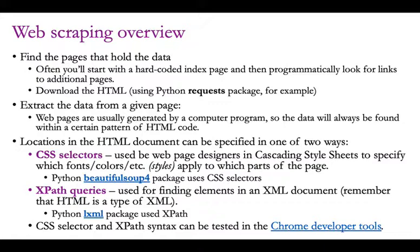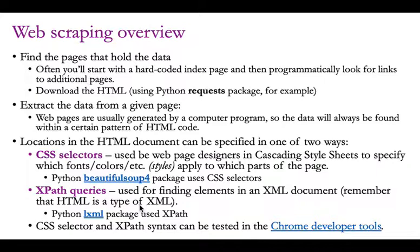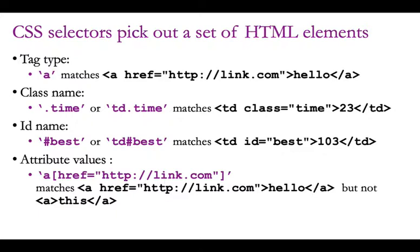Let's give an overview of web scraping — the general steps. First, find pages that hold the data you want. Download the HTML and figure out what parts you need to pick out and store. Whenever you see a web page, you can look at the HTML code to figure out how data is encoded. Then write a program that downloads the HTML starting with some original page, and use either CSS selectors or XPath queries to find the specific parts of the HTML where the data resides.